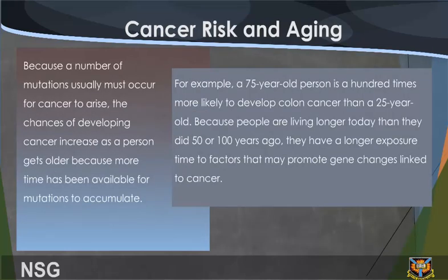Cancer Risk and Aging. Because a number of mutations usually must occur for cancer to arise, the chances of developing cancer increase as a person gets older, because more time has been available for mutations to accumulate. For example, a 75-year-old person is a hundred times more likely to develop colon cancer than a 25-year-old, because people are living longer today, they have a longer exposure time to factors that may promote gene changes linked to cancer.